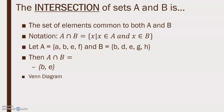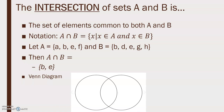The Venn diagram for A intersect B: we've got our two circles. The elements in the intersection are B and E. Also in A are A and F. Also in B are D, G, and H.